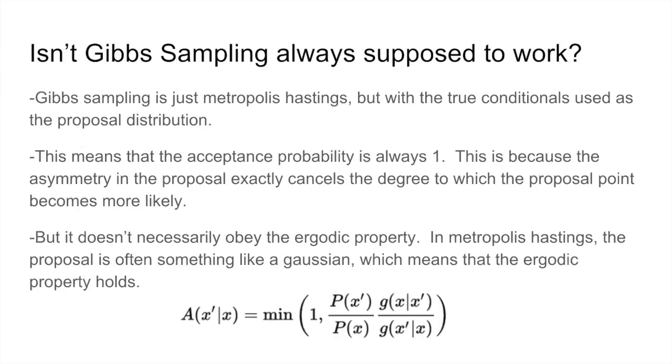So what you might be thinking now is, isn't Gibbs sampling always supposed to work? And the answer is that Gibbs sampling is actually quite restricted in the cases where it works. Basically Gibbs sampling is the Metropolis-Hastings algorithm, but with the proposal distribution set to be a conditional distribution for some subset of the dimensions. With normal Metropolis-Hastings, the point sampled from the proposal would need to be stochastically accepted with a probability based on how likely the new point is and how unlikely the reversal is under the proposal distribution. But with Gibbs sampling, these two ratios cancel out exactly, so the acceptance probability is always one.